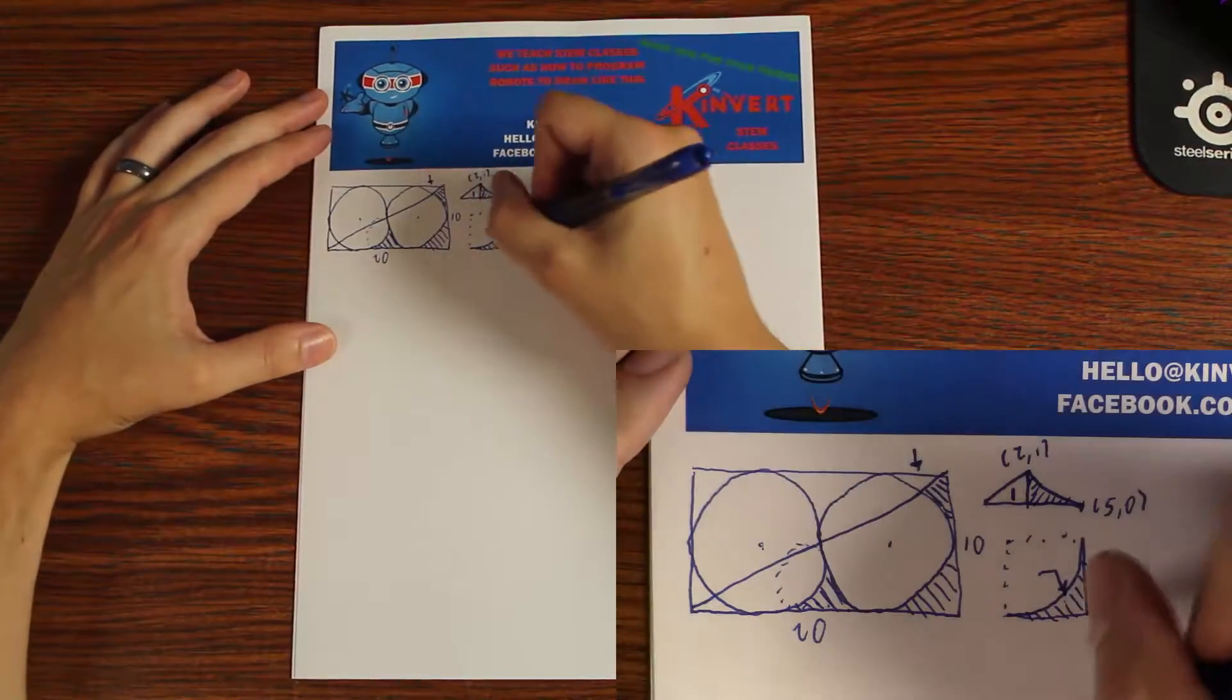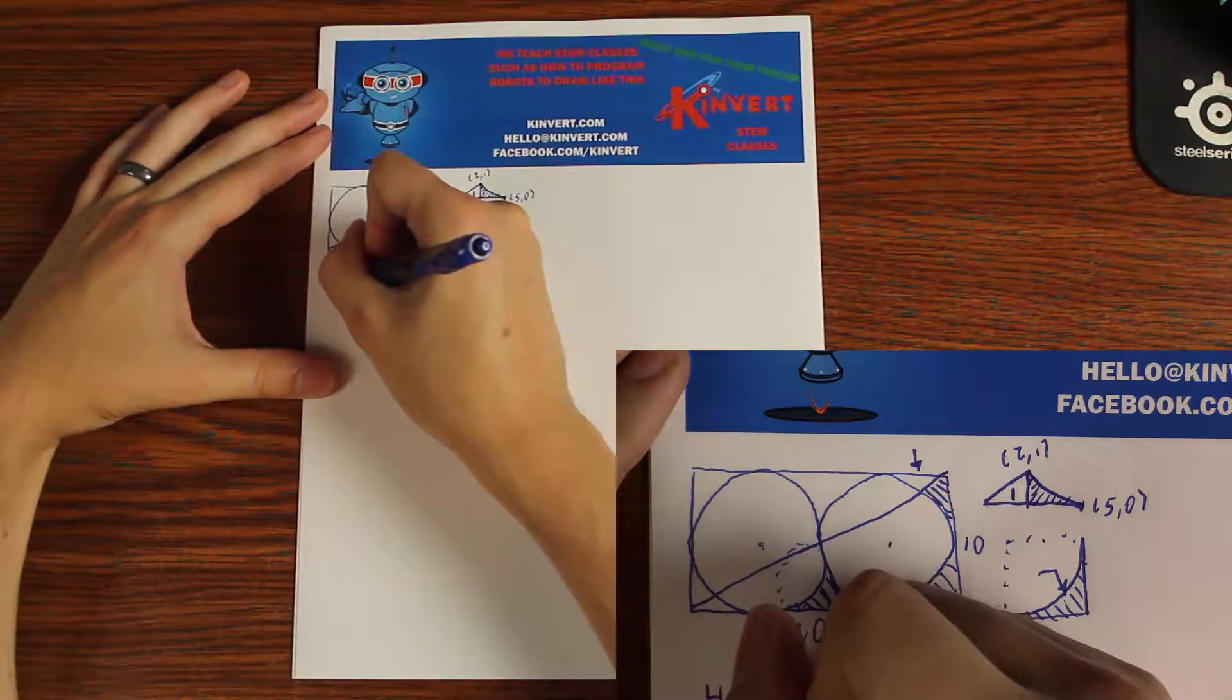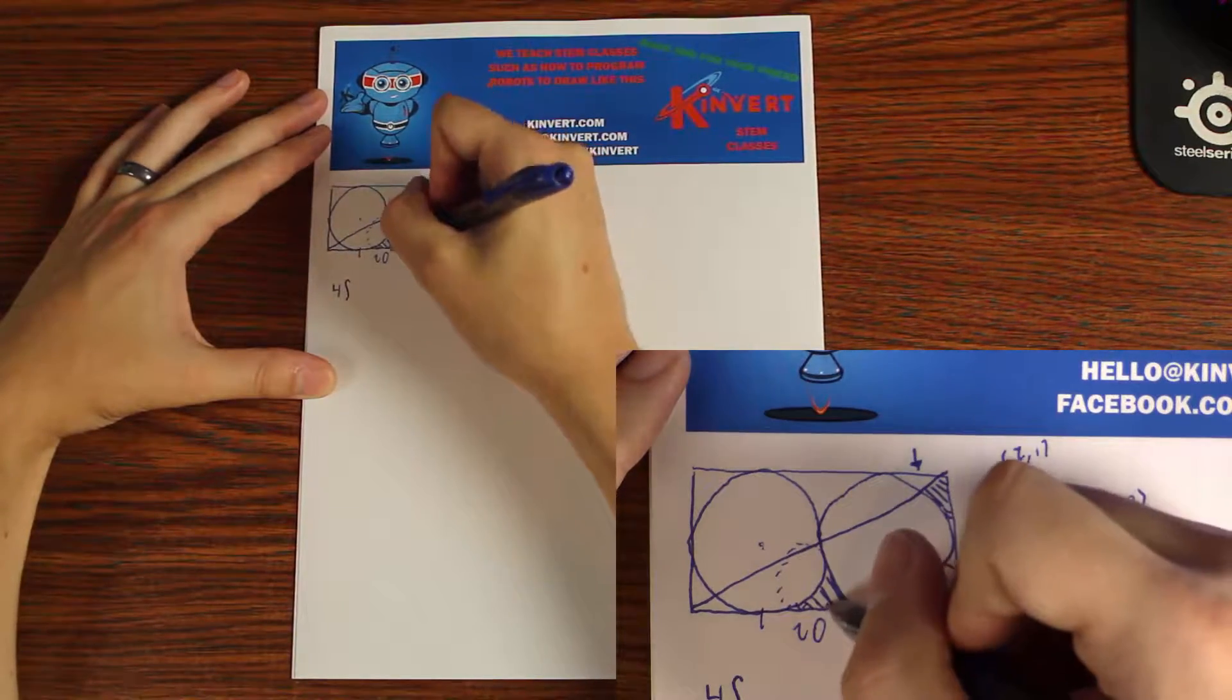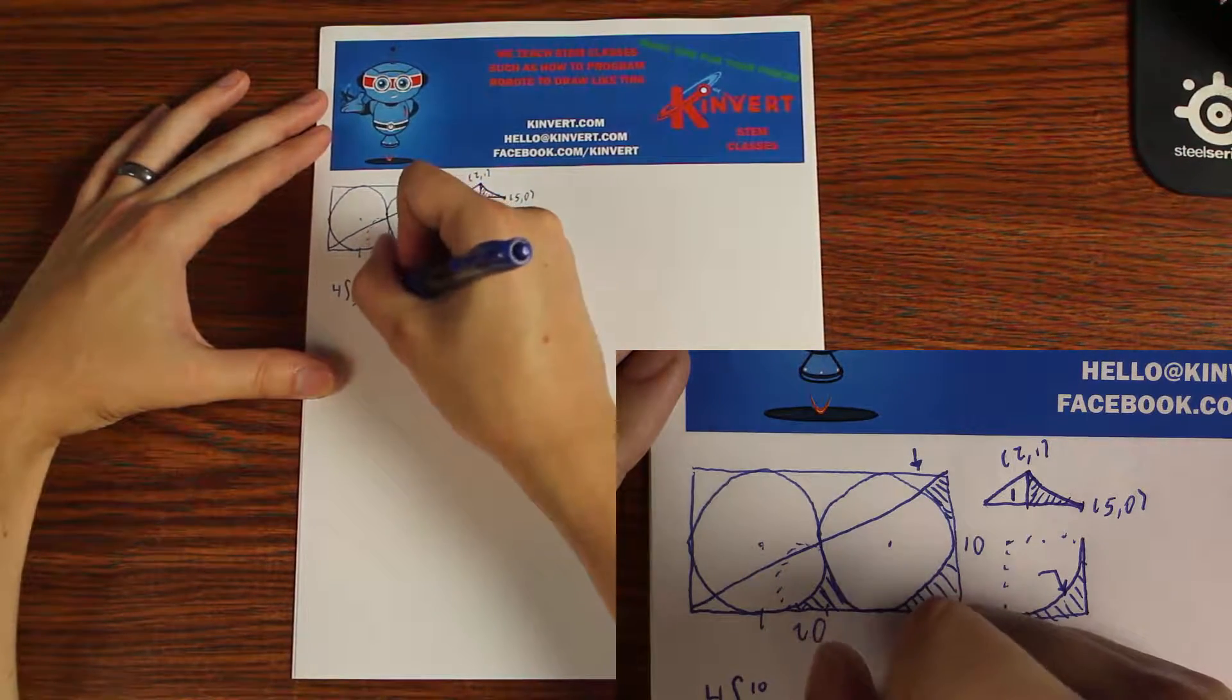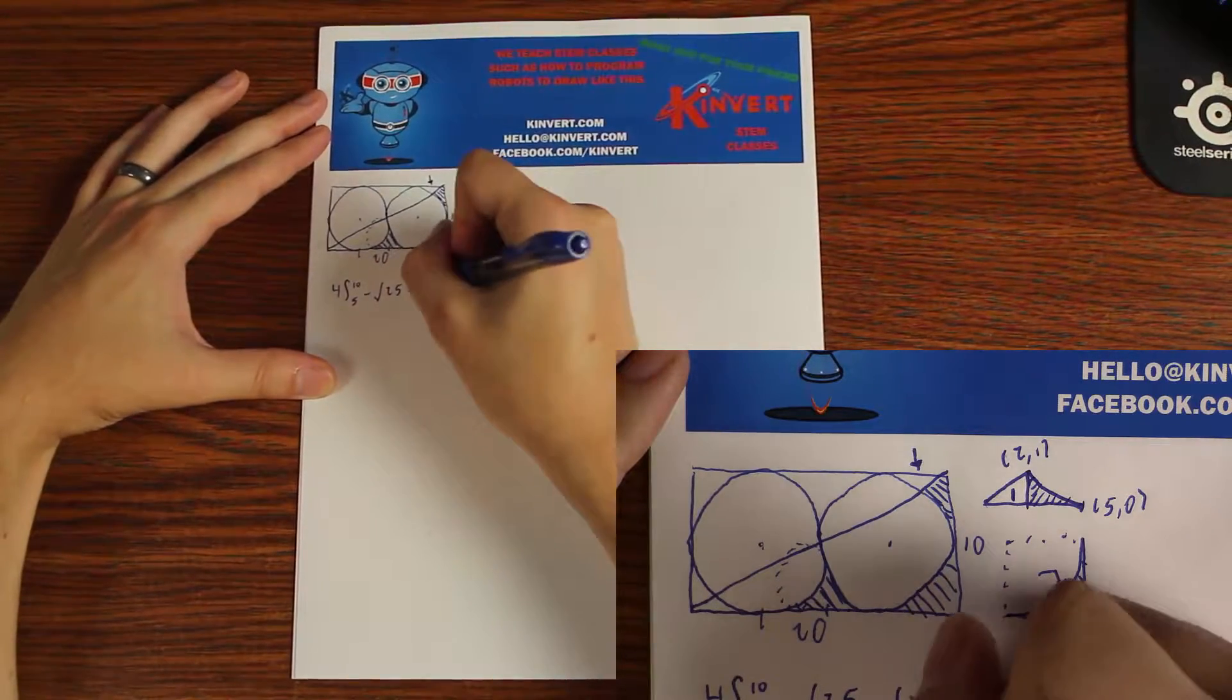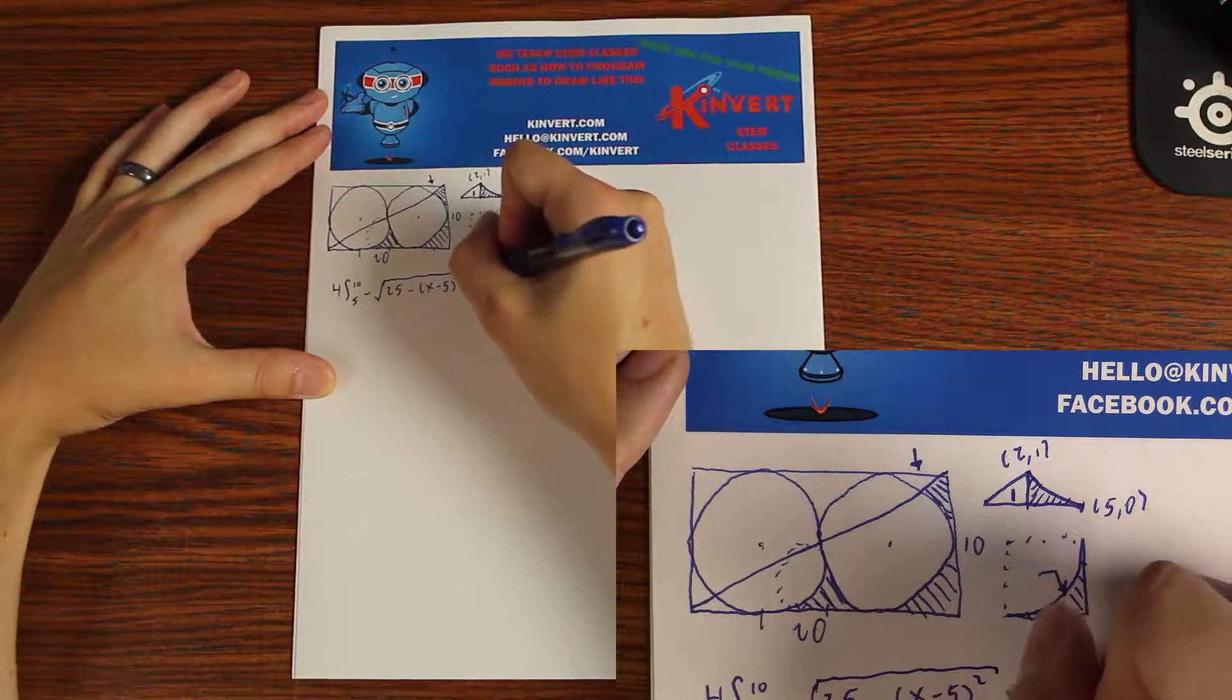So first what we're going to do is find the area of this. And there are four of them. So you can multiply the integral by 4. And the integral is going from where to where? It's going from 5 to 10. That's a pretty easy part to find there. Now the equation for the circle is negative square root of 25 minus x minus 5, which is squared. And then you're adding 5.